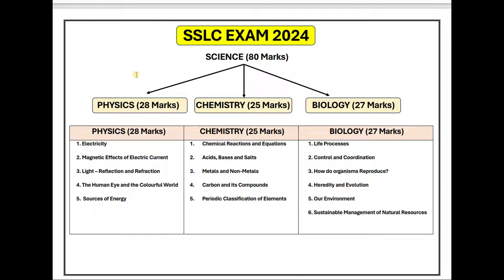Science is a concept-based subject — especially maths and science — you should understand the concept to score good marks. For science, you will be writing an exam for 80 marks. The question paper will be divided into three parts: Part A Physics, Part B Chemistry, and Part C Biology. Physics consists of 28 marks, Chemistry 25 marks, and Biology 27 marks.